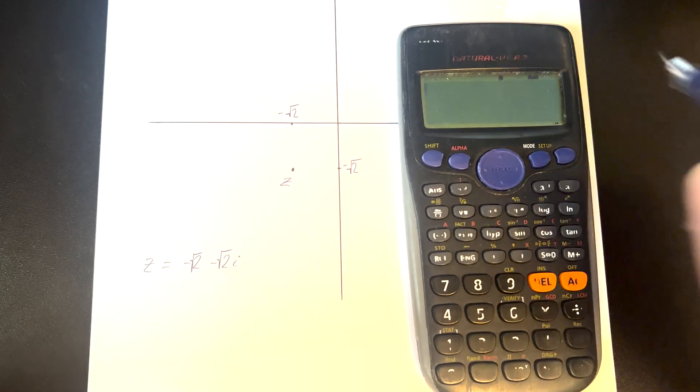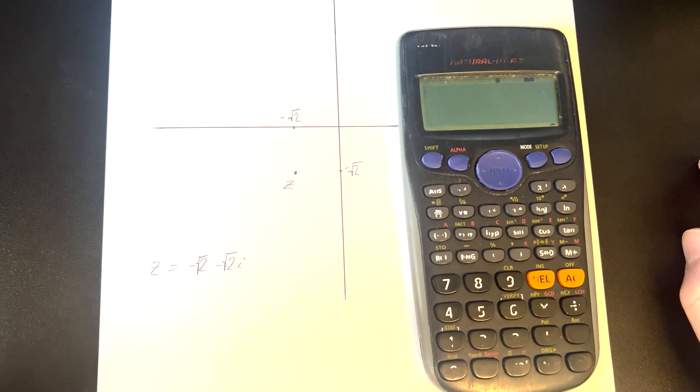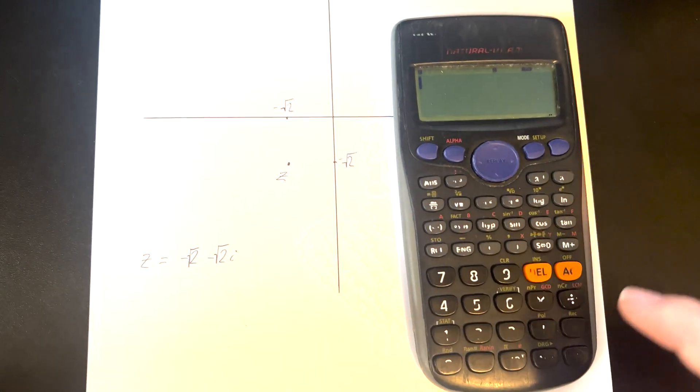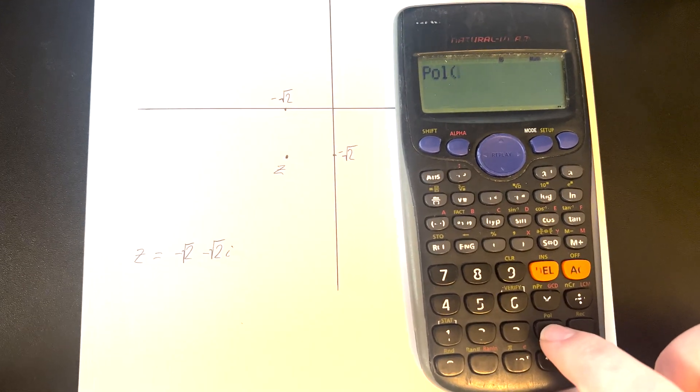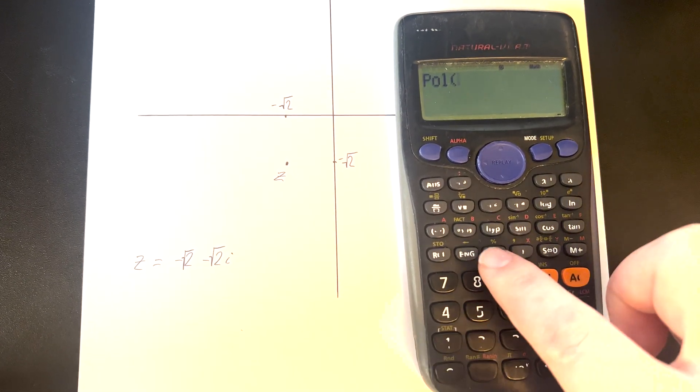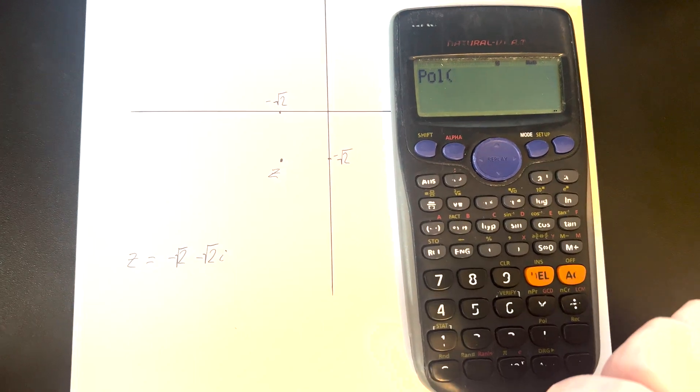We know that it would occur right there on our Argand diagram. To convert it in our calculator from rectilinear into polar, we'll just press shift and then pole. What that brings up is our polar input form.